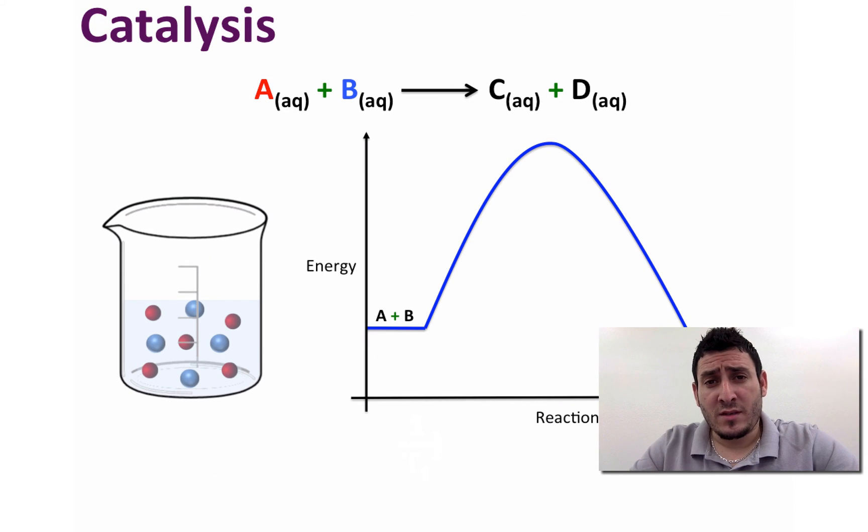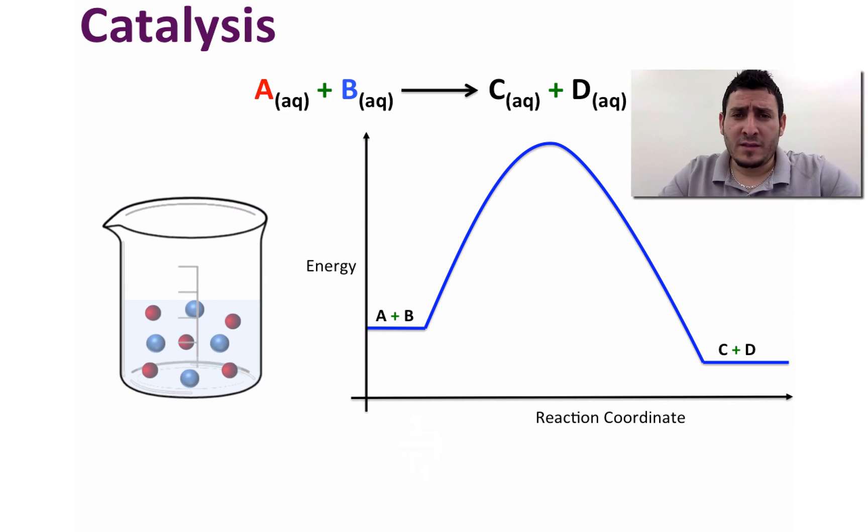Now let's discuss catalysis. Catalysts are known to speed up the reaction rates once added to the reaction mixture. Consider the following reaction where A plus B gives C plus D. This reaction has a threshold energy which is the activation energy and in here we call it Ea uncatalyzed.